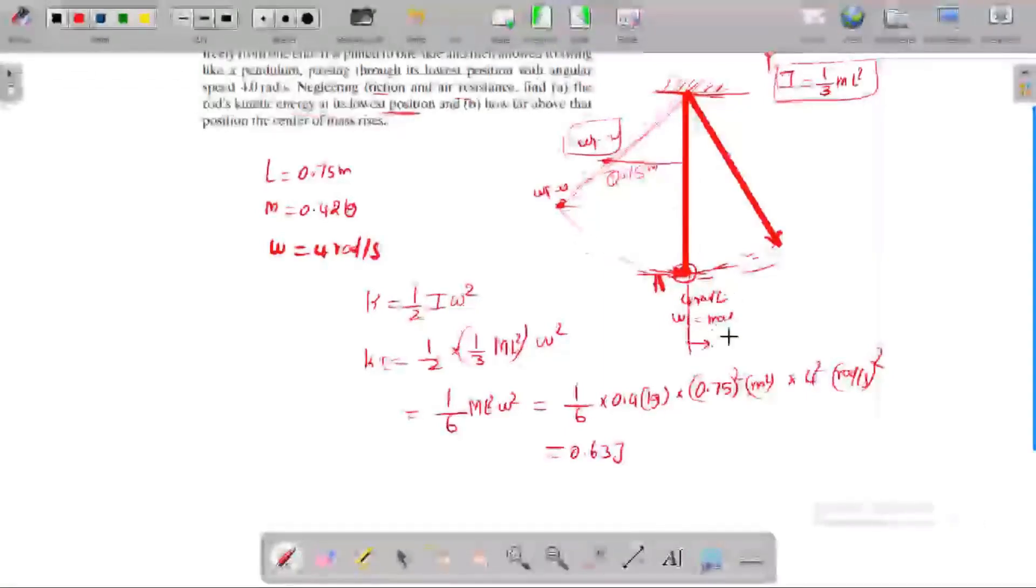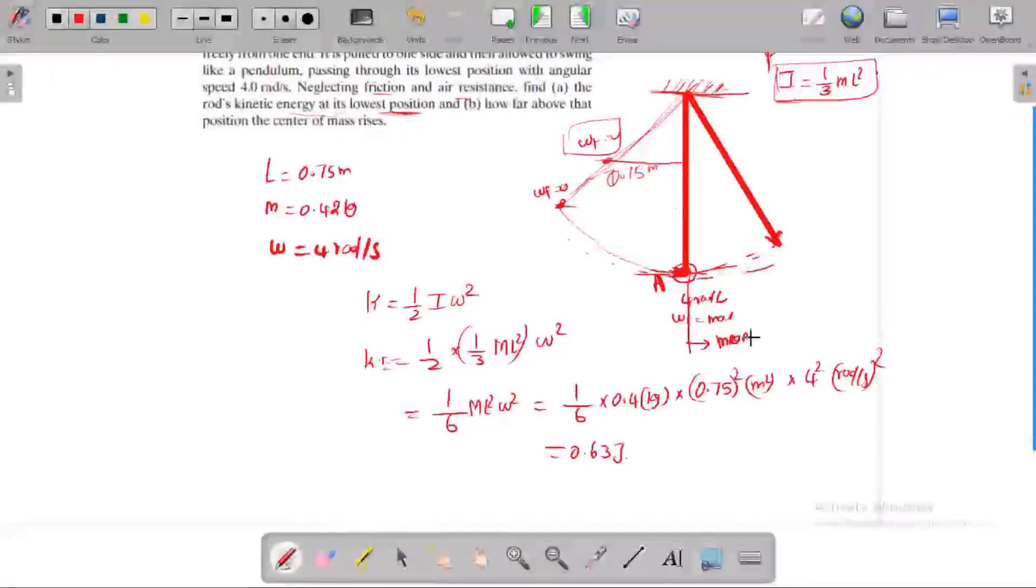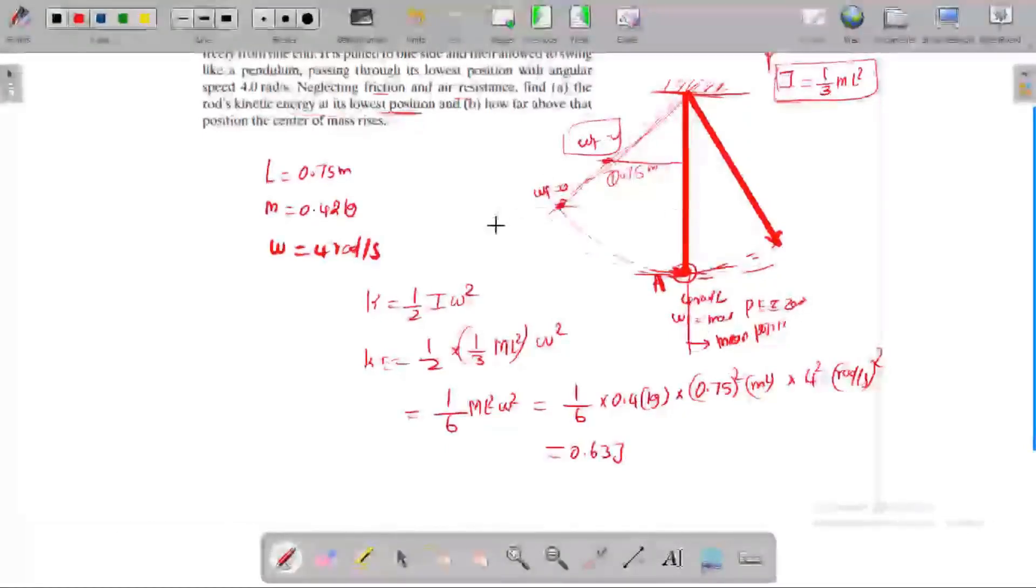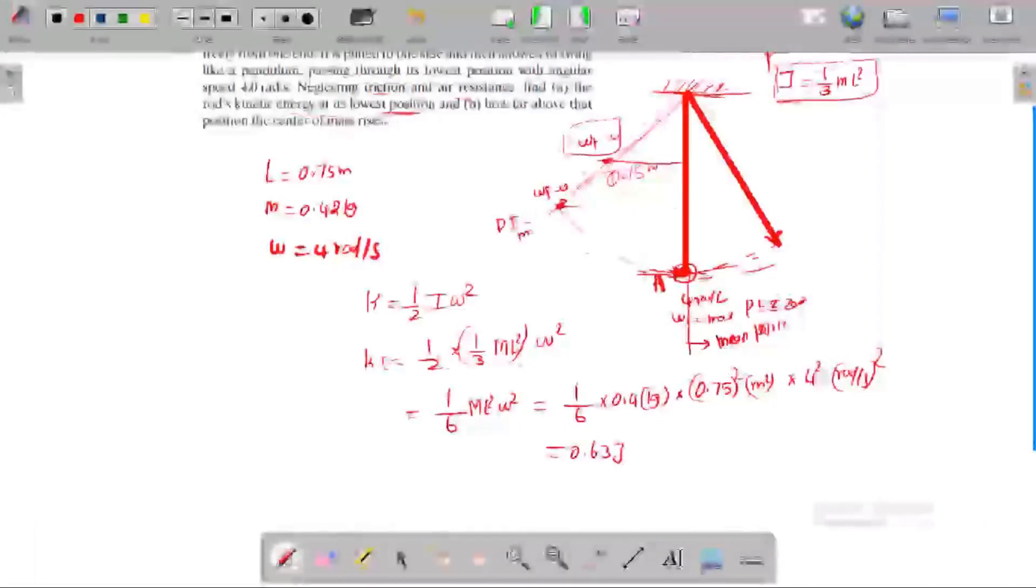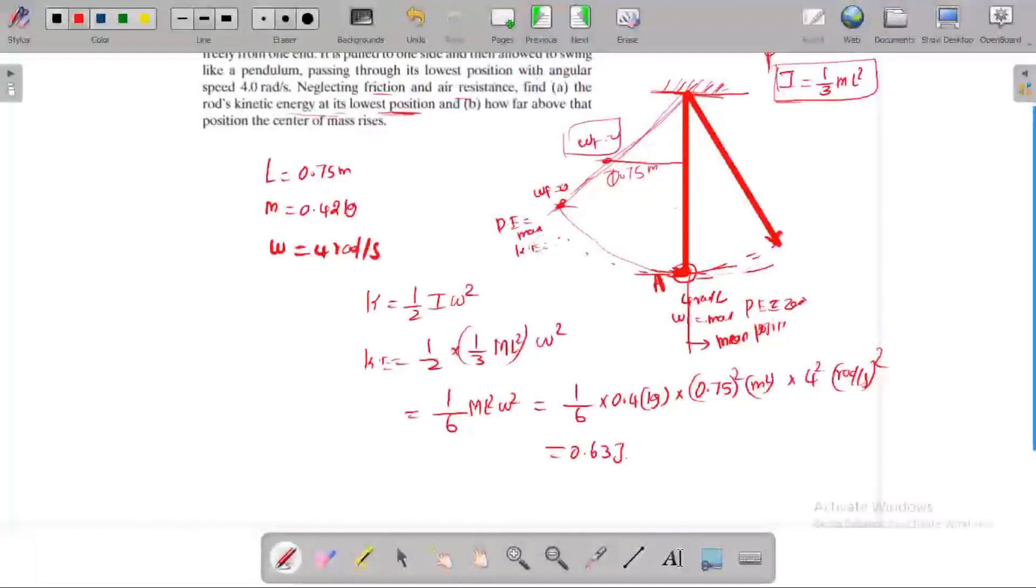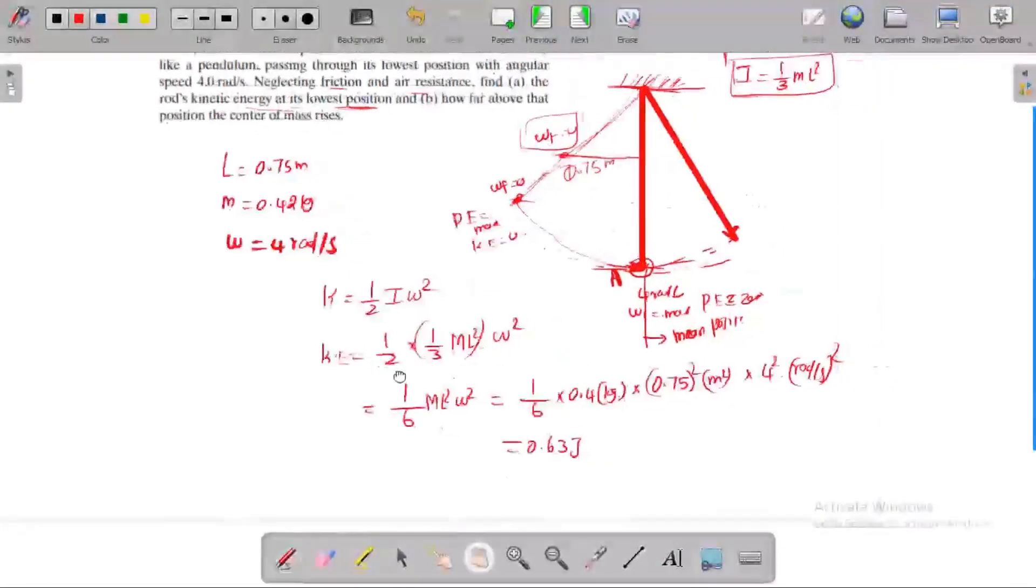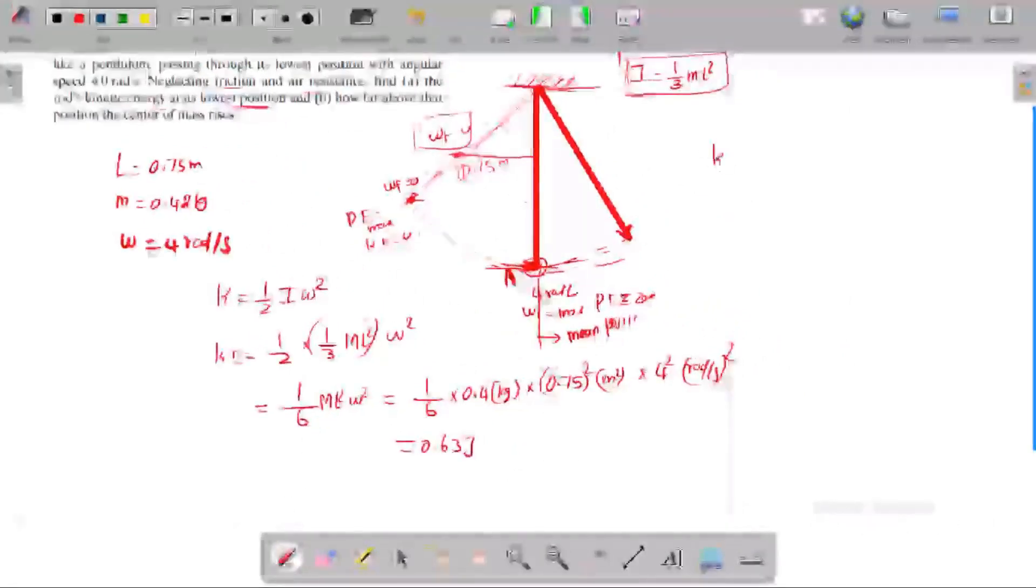This is known as the mean position. In this position, the kinetic energy is maximum and potential energy is zero. At the maximum height level, the kinetic energy is zero and potential energy is maximum. The energy is conserved, so we use the conservation of energy principle. Kinetic energy is equal to potential energy.